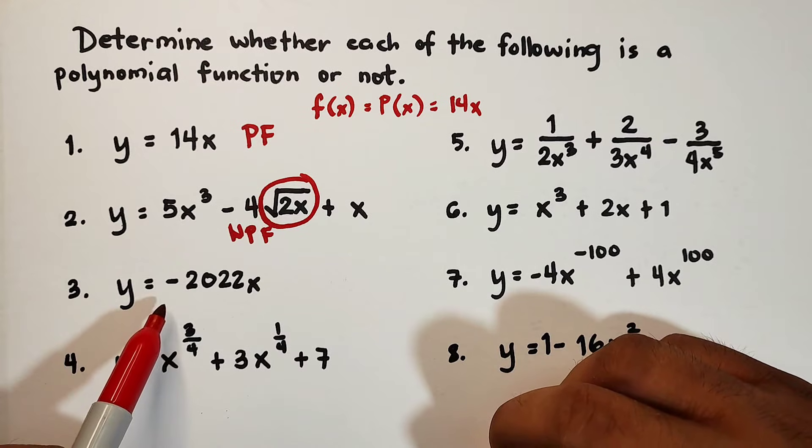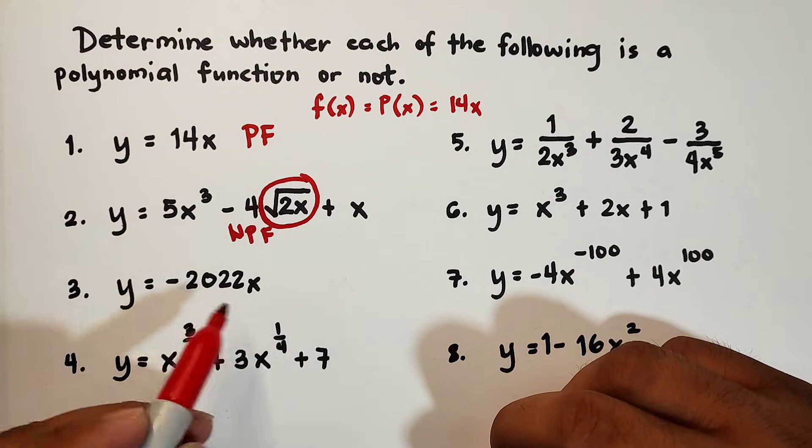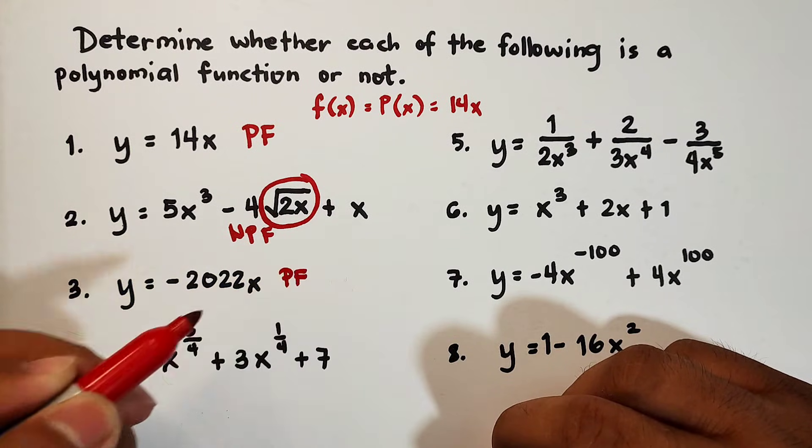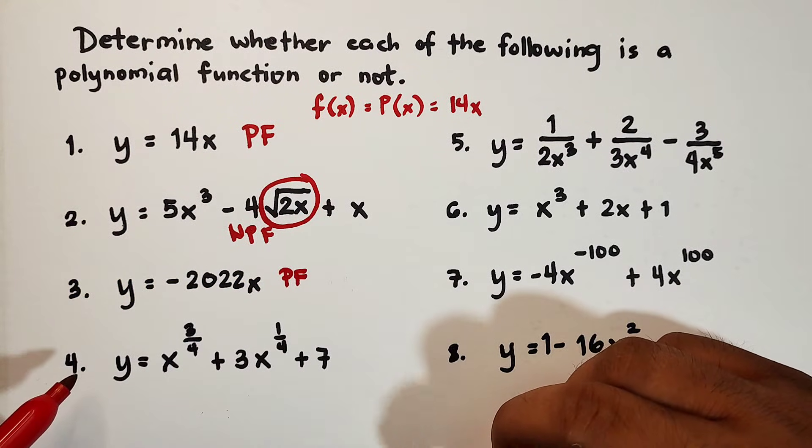Next, y is equal to negative 2022x. This one is an example of polynomial function.